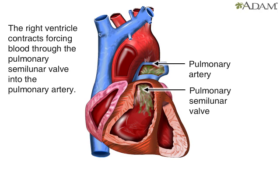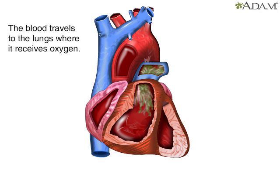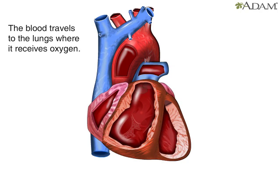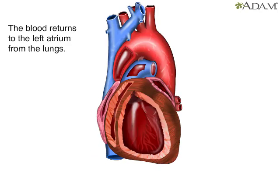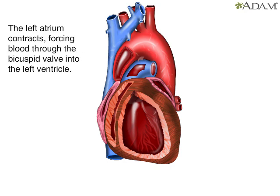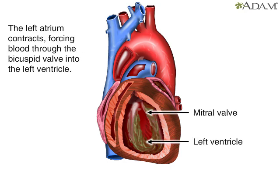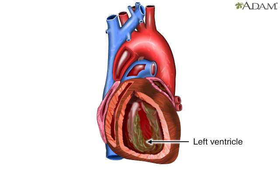Then the blood travels to the lungs. In the lungs, the blood receives oxygen, then leaves through the pulmonary veins. It returns to the heart and enters the left atrium, where blood is forced through the mitral valve into the left ventricle.